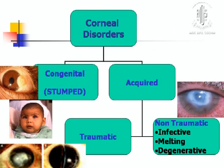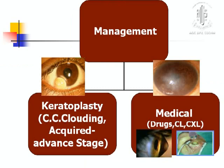Coming to the disease proper, corneal disorders can be divided into congenital and acquired. Congenital disorders use the popular acronym STUMPED. Acquired disorders are either traumatic or non-traumatic; non-traumatic can be infective, melting, or degenerative type. The management is either medical or surgical.